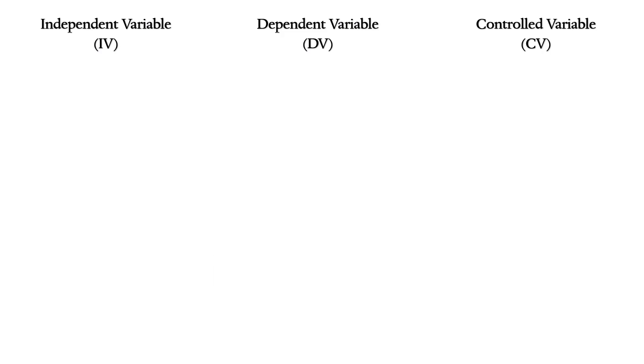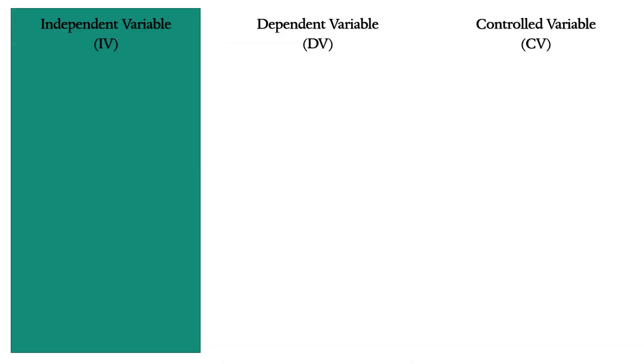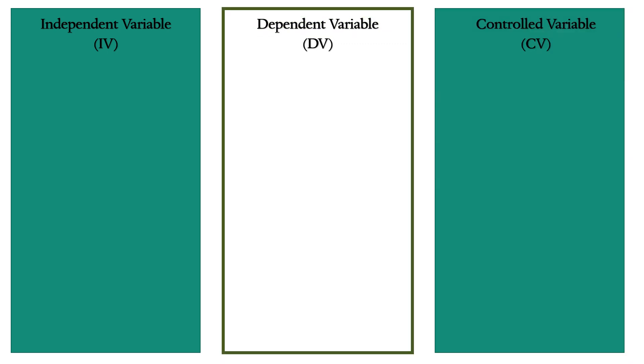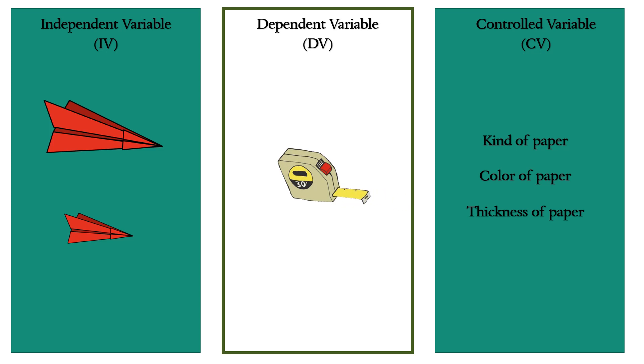Again, let's identify the independent, dependent, and controlled variable. Our independent variable is the size of the paper plane. The bigger and the smaller paper plane. Our controlled variables are the kind, the color, and thickness of paper. And lastly, what happened to the two paper planes? Very good! They traveled in different distance. So, our dependent variable is the distance traveled by the two paper planes.